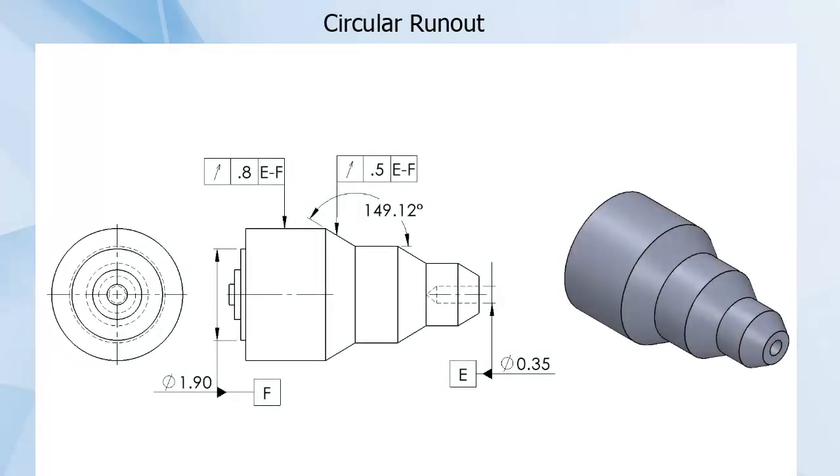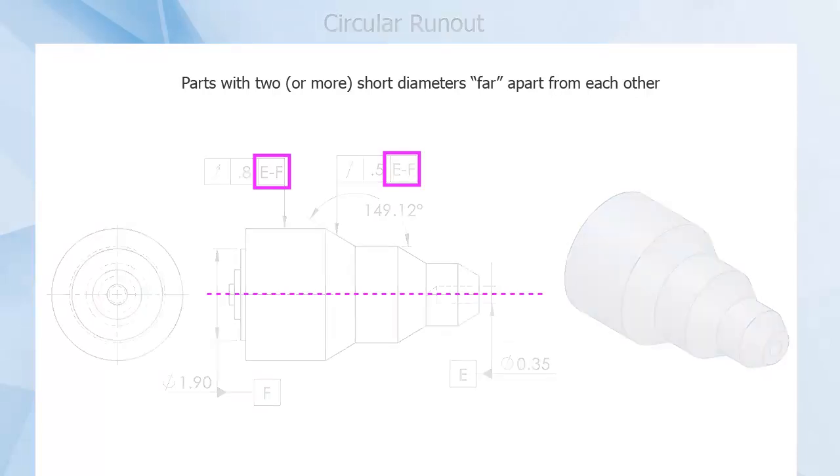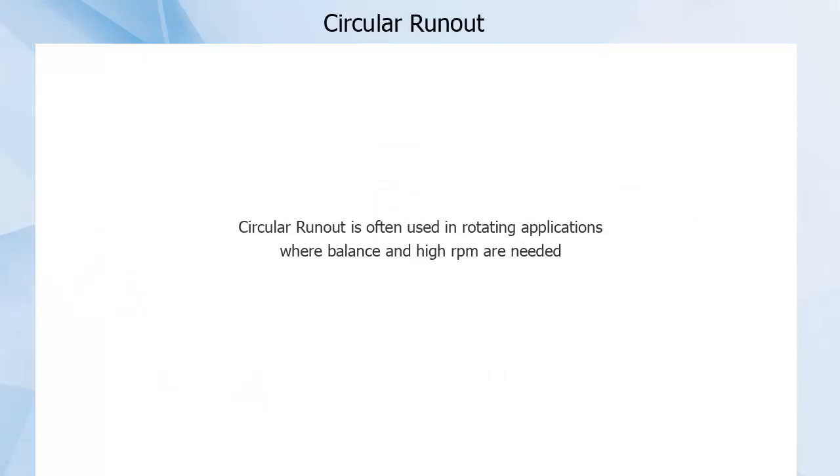The third option would be parts with two or more short diameters, far apart from each other. This definition is commonly met by camshafts or similar rotating parts. The distance between the short diameter sections allows the part to be held and rotated around a single datum axis. Note here how the two datums are combined to give a single datum axis and are not provided as a primary and secondary datum. This callout is often used in rotating applications where balance and high RPM are needed.